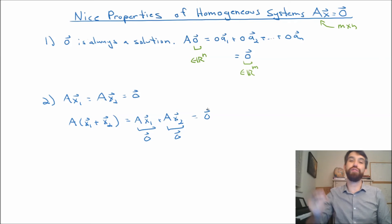I can do the same thing with scalar multiplication. If I've got a solution to the homogeneous, I could multiply it by some scalar, and that is all going to be a solution to the homogeneous for much the same reason.